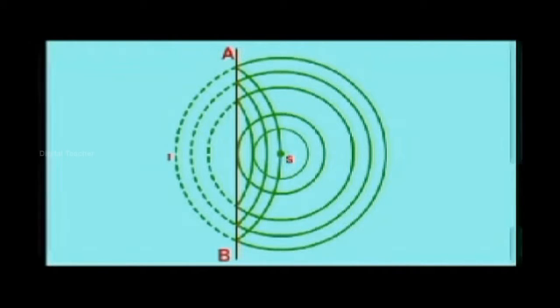The center of the reflected waves will be on the other side of the wall. This point I behaves as an image of the point S. The distance of the center I of a reflected wave from the wall will be equal to the distance OS of center S of the incident wave from the wall.